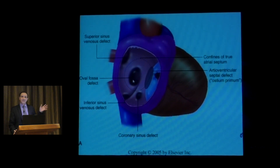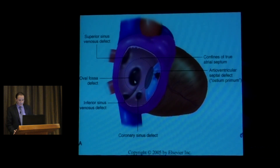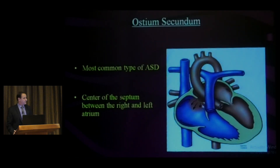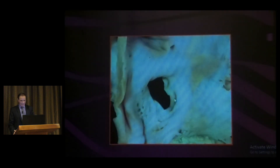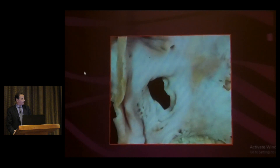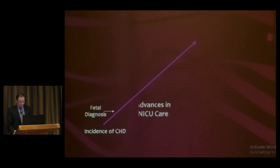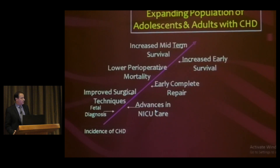When we say transcatheter closure, that means ASD secundum which is amenable for transcatheter closure. In the four-chamber view, the ASD is situated in the middle of the atrial septum. You will see the defect in the fossa ovalis.